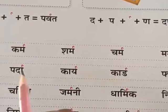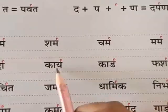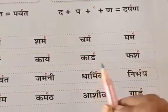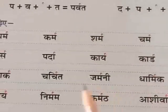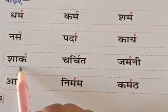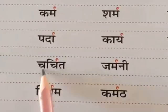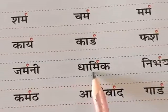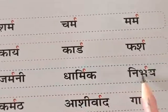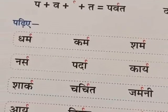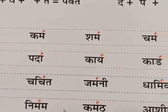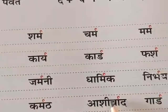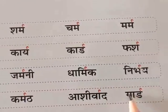Narsh, pardha, kaar, fars, chark, charchi, germani, dharmik, nirbhai. Aur nirbam, karm, karmat, ashivar, aur last mein god.